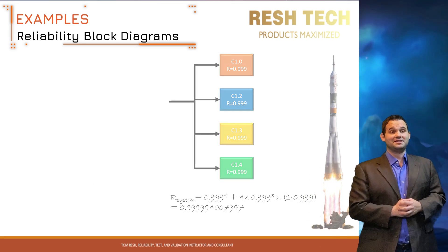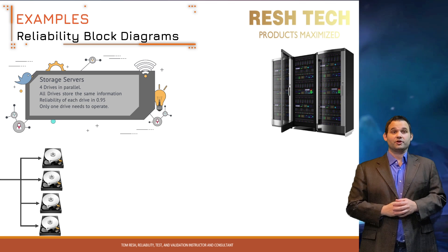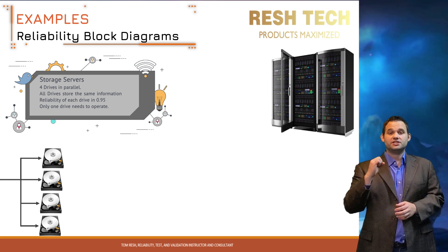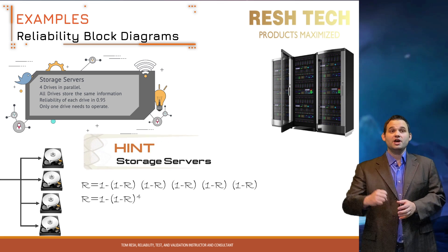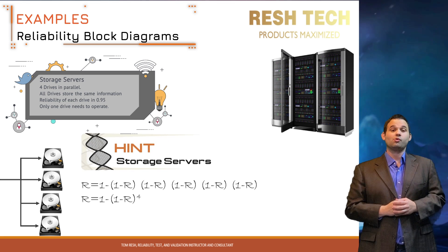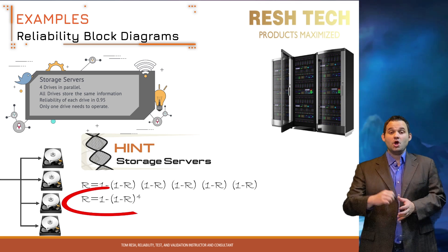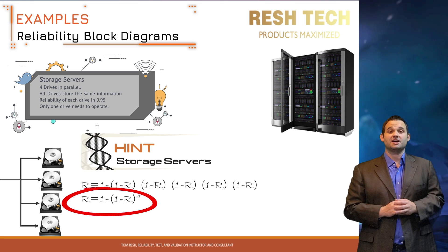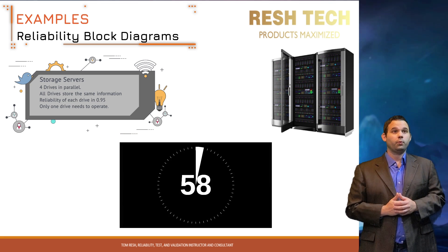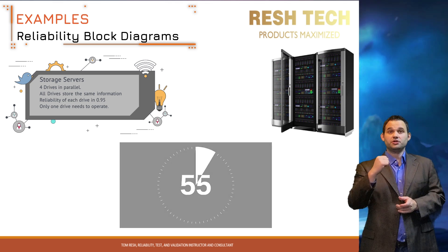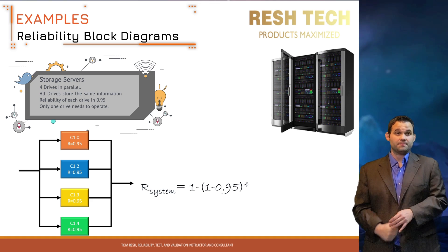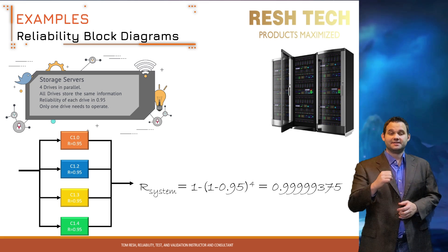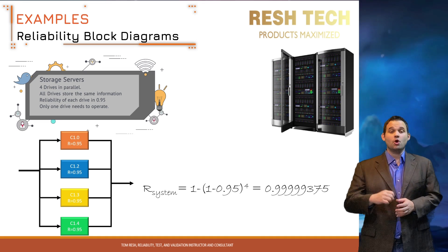In this real-world example, we have a storage server with four parallel drives where all four drives store the exact same information. The reliability of each drive is 0.95 and only one drive needs to be operational for the server to operate and save data. Pause and solve. This example really shows the power of redundancy in a system to make it more reliable, so keep this in mind when designing your systems.